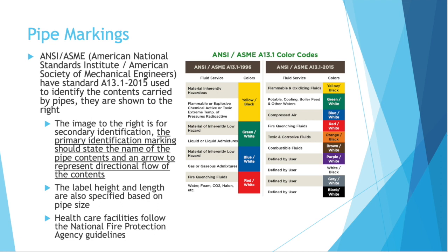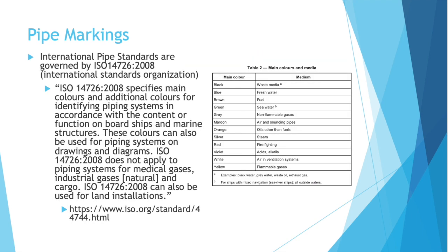The label height and length are also specified based on pipe size in the standards. Healthcare facilities and their pipes follow the National Fire Protection Agency guidelines, not the ANSI/ASME guidelines. The international pipe standards are governed by ISO 14726-2008, which specifies main colors and additional colors for identifying piping systems in accordance with content or function on board ships and marine structures. These colors can also be used for piping systems on drawings and diagrams.